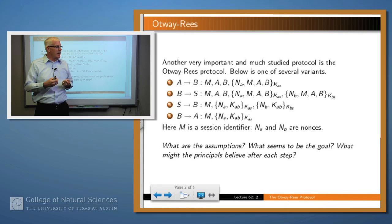So what is this protocol trying to accomplish? It's trying to authenticate both parties to each other and to S, so S knows that it's really A and B that it's talking to.